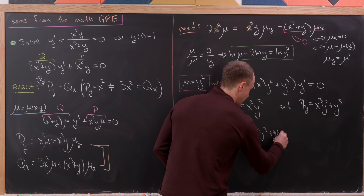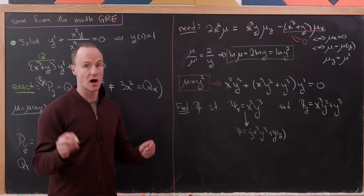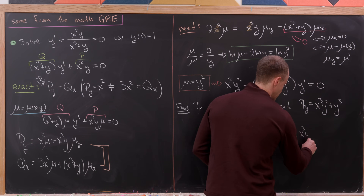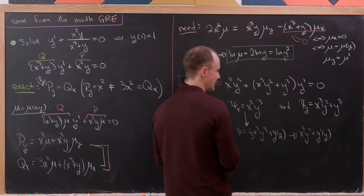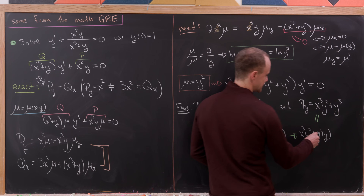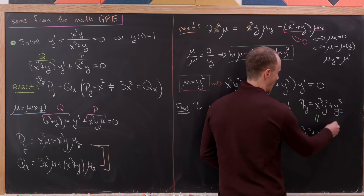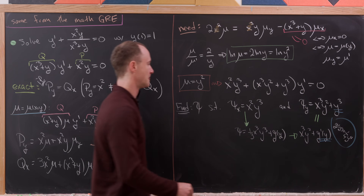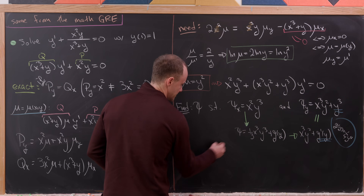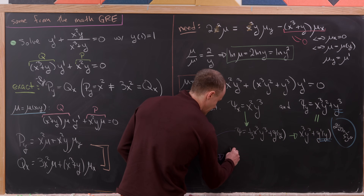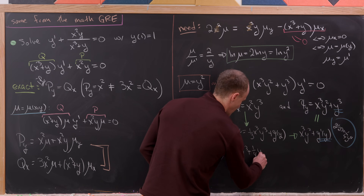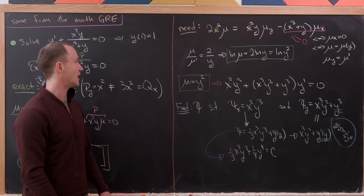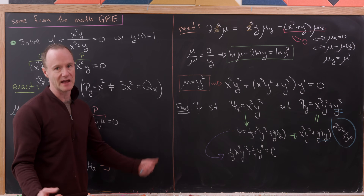Taking the partial anti-derivative with respect to x gives ψ = (1/3)x³y³ + g(y). Differentiating with respect to y gives x³y² + g'(y), and equating this to ∂ψ/∂y = x³y² + y³ tells us g'(y) = y³, so g(y) = (1/4)y⁴. Thus ψ = (1/3)x³y³ + (1/4)y⁴ = C. Applying the initial condition y(1) = 1 determines C.